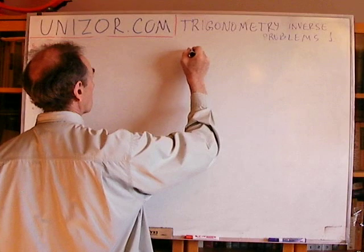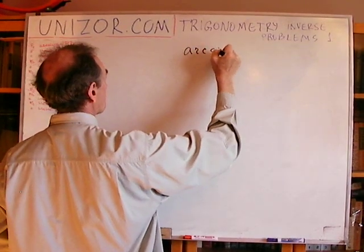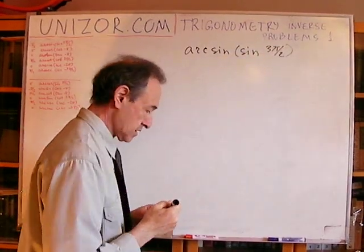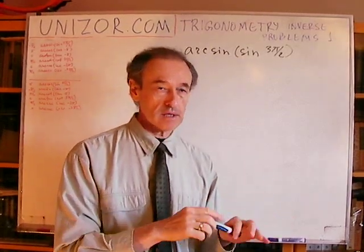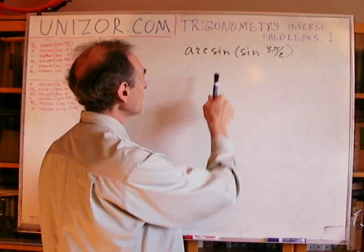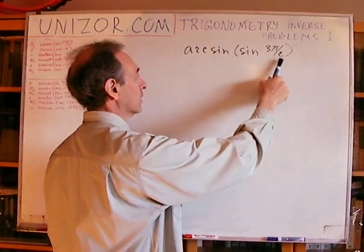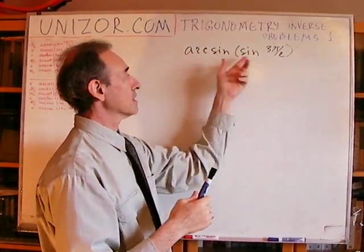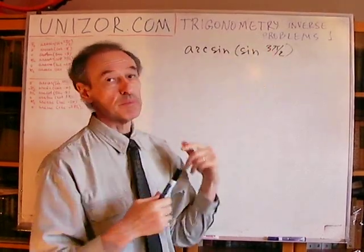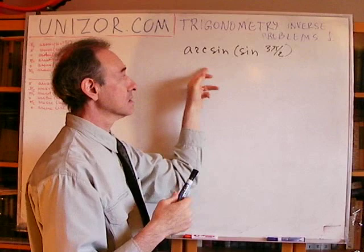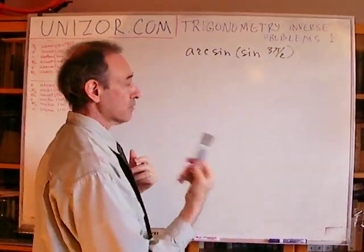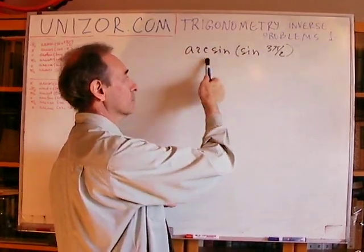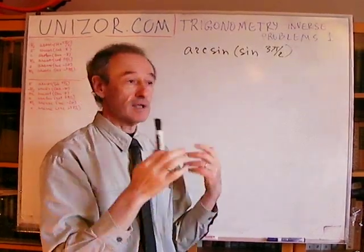The first problem is: evaluate arc sine of sine of 3π/2. In this case, as in any other case, the problem is that we have to consider this particular value, but we have to find the angle which has the same sine as 3π/2. But this angle is not 3π/2. Obviously, you can think that arc sine is inverse to sine, so if we apply a function and then its inverse, we should return back. But that's not true.